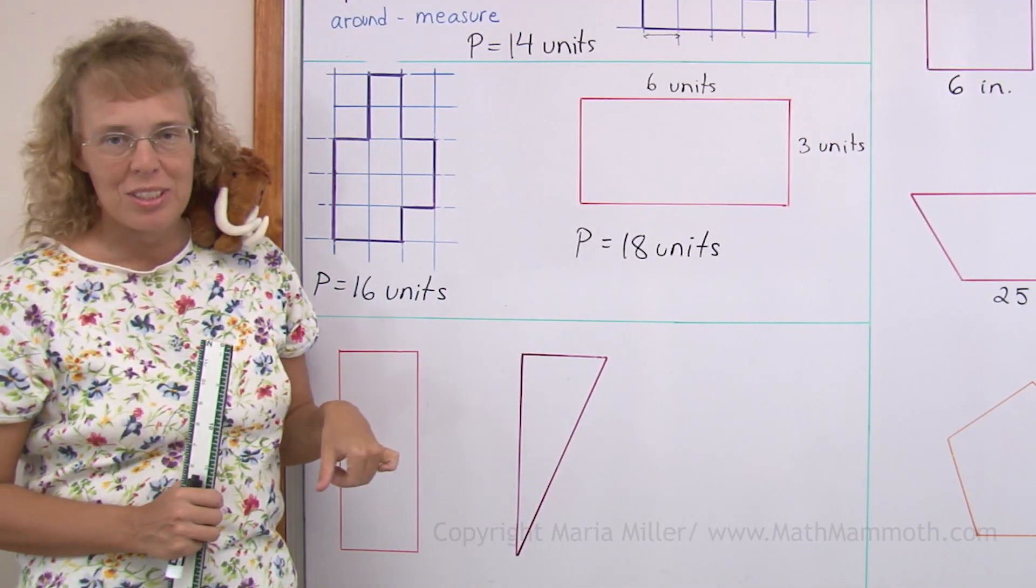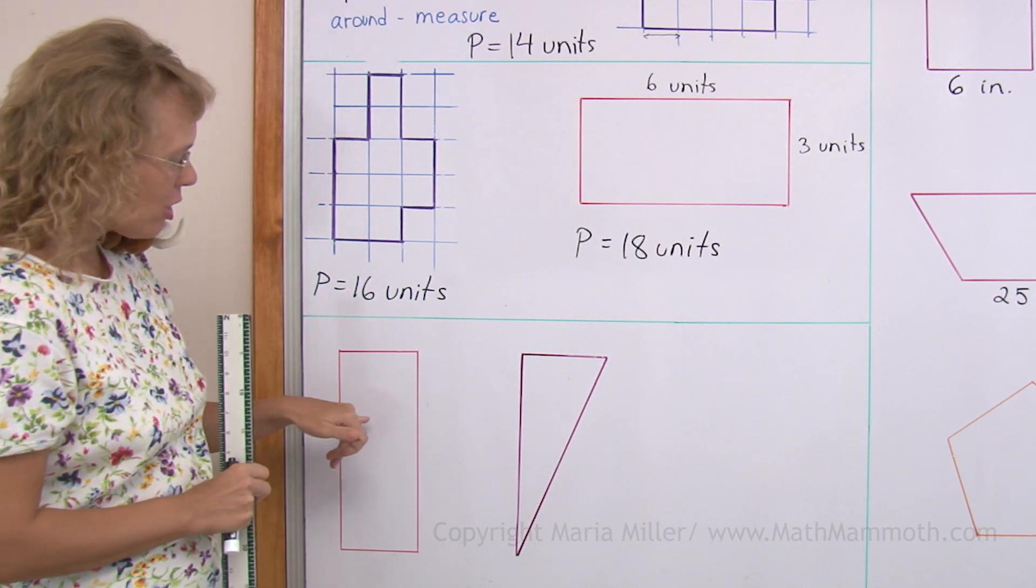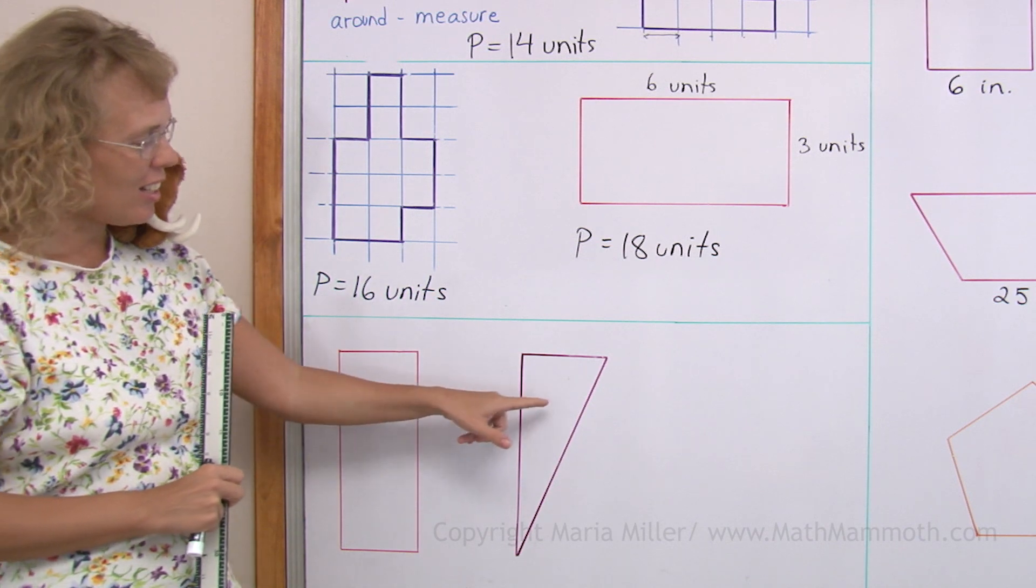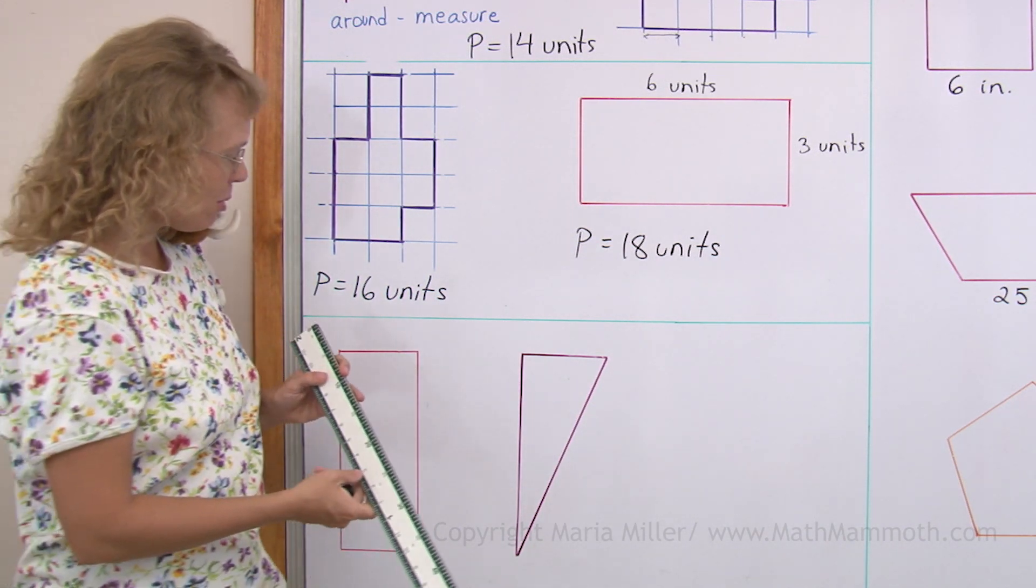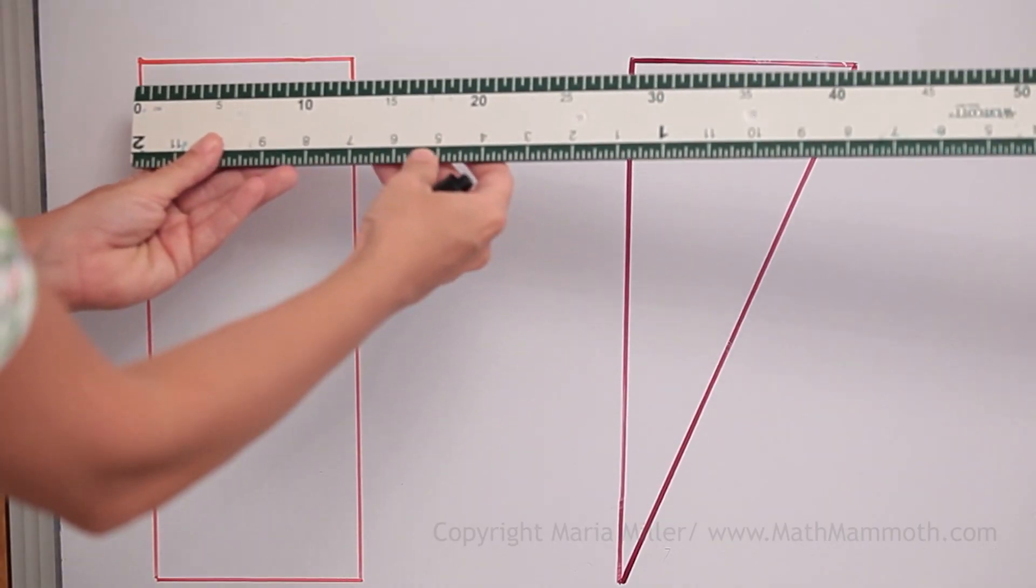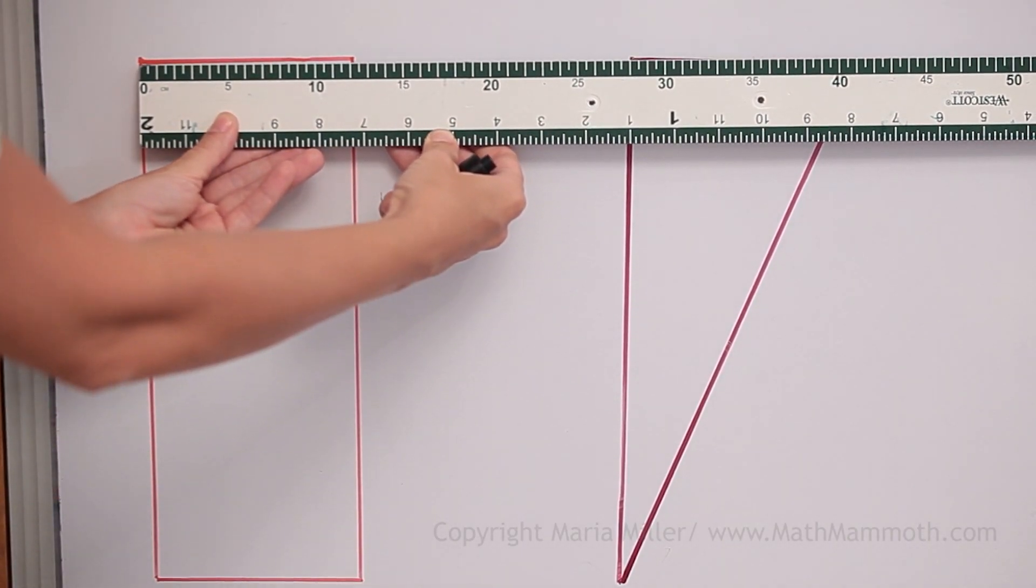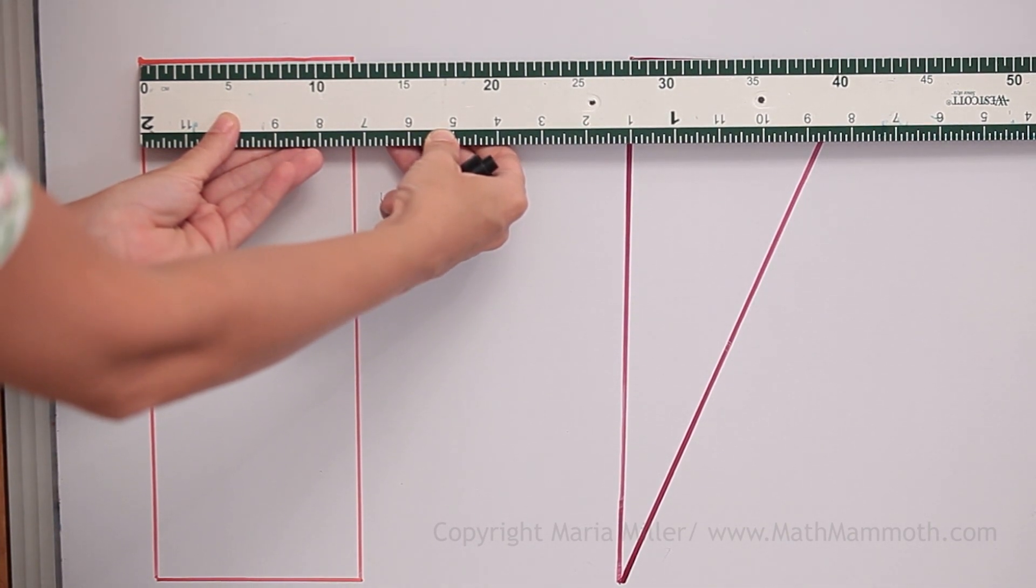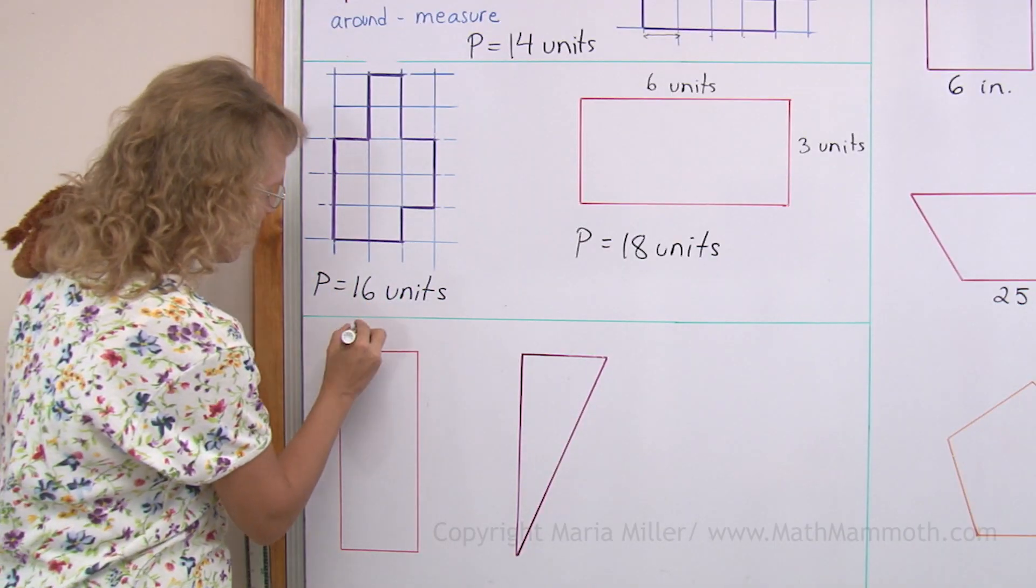With these two shapes, we're going to find the perimeter by measuring. I'm going to measure this one in centimeters, and this one in inches. Okay. And so the first one, I'm going to put my centimeter ruler here. And can you see? It is two centimeters past ten. So that makes twelve centimeters, right? Let's write it here.